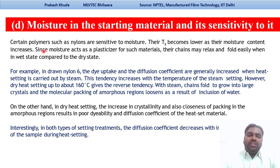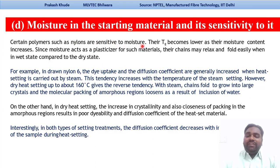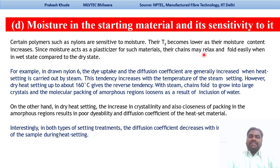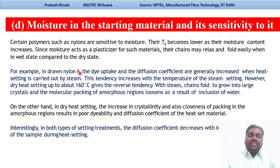The next parameter is moisture in the starting material. As seen in the last lecture on drawing, moisture in the starting material also affects heat setting performance. Nylon is very sensitive to moisture — it has a moisture regain of 4%, and its Tg becomes lower as moisture content increases, since moisture acts as a plasticizer. The chains relax more easily and fold in the wet state compared to the dry state. For example, in drawn nylon 6, the dyeability and diffusion coefficient generally increase when heat setting is carried out by steam or in wet state.